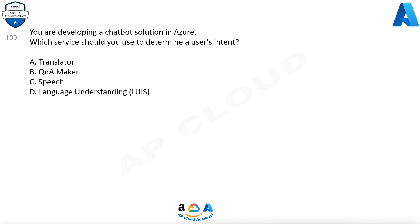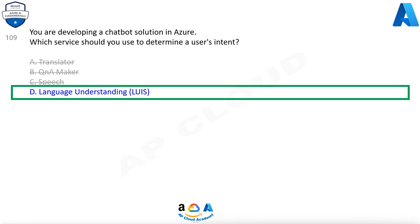Question 109. You are developing a chatbot solution in Azure. Which service should you use to determine a user's intent? A. Translator. B. Q&A Maker. C. Speech. D. Language understanding, LUIS. Answer: D. Language understanding (LUIS) is a cloud-based API service that applies custom machine learning intelligence to a user's conversational natural language text to predict overall meaning and pull out relevant, detailed information. Design your LUIS model with categories of user intentions called intents. Each intent needs examples of user utterances, and each utterance can provide data that needs to be extracted with machine learning entities.